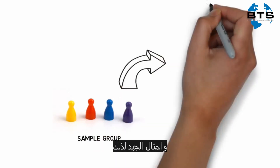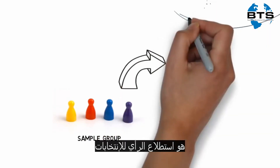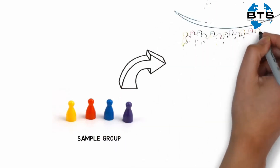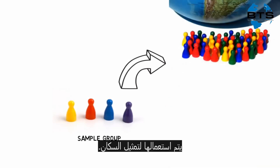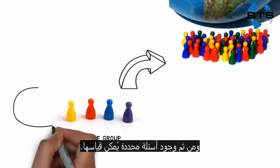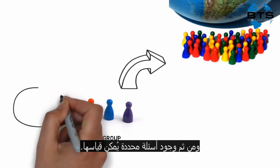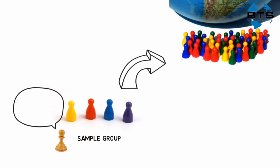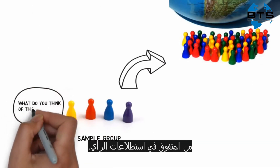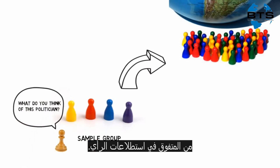A good example of this would be polling for an election. A sample group is used to represent the population and they are then asked specific questions that can be measured. It is then possible to gauge who is leading in the polls and therefore more likely to win the election.